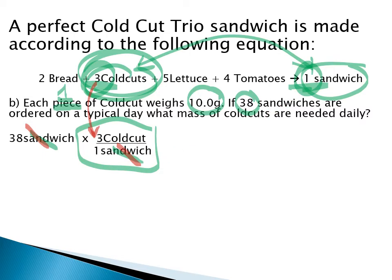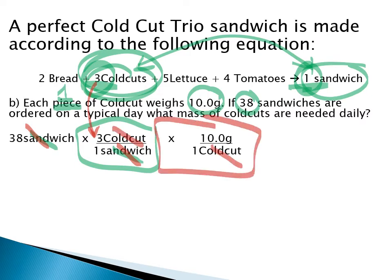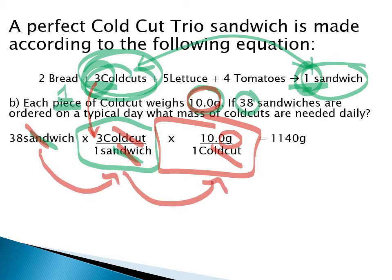The delivery person is going to weigh out a mass of cold cuts rather than count them, so we apply another conversion factor: the number of cold cuts goes on the bottom, and we know each one weighs 10 grams. Cold cuts cancel out; units of grams carry through to our answer of 1140 grams of cold cuts used per day. We took sandwiches, converted to number of cold cuts, then converted that to an actual mass of cold cut meat.